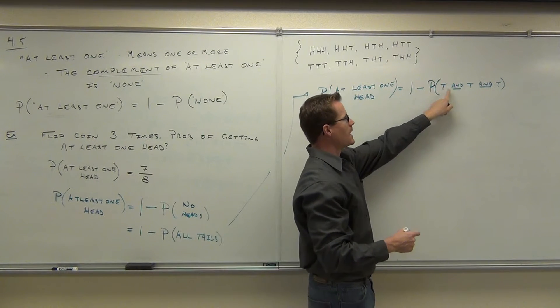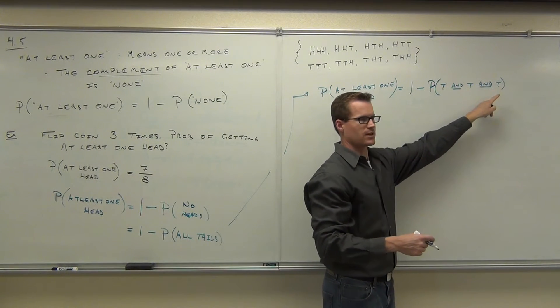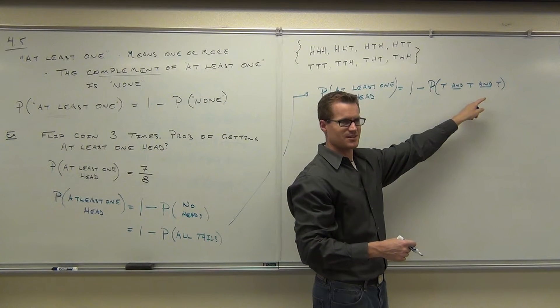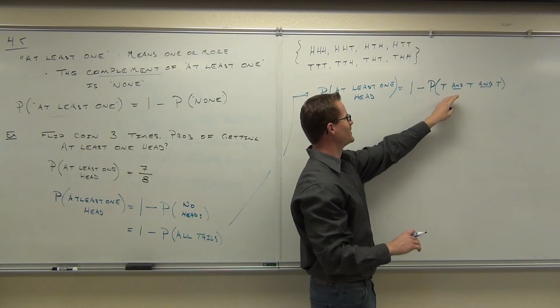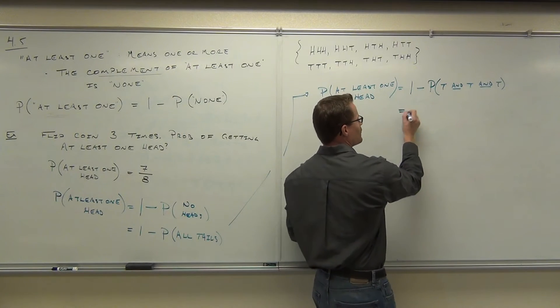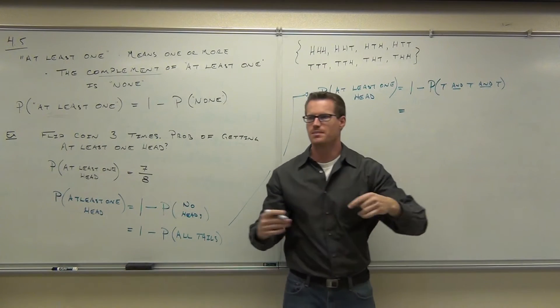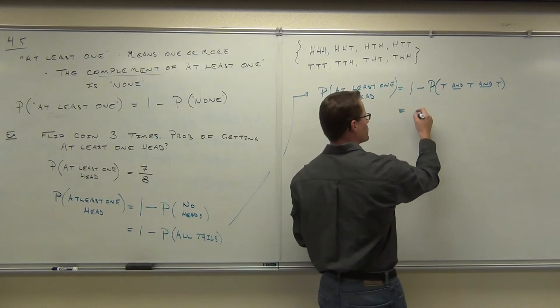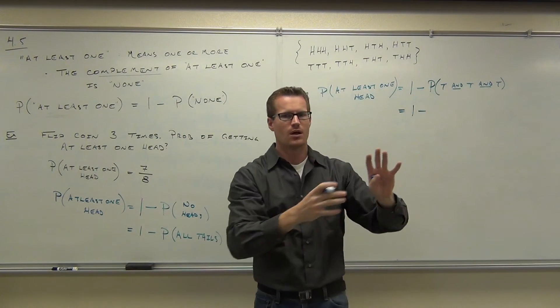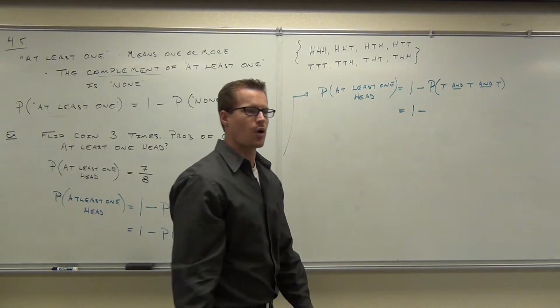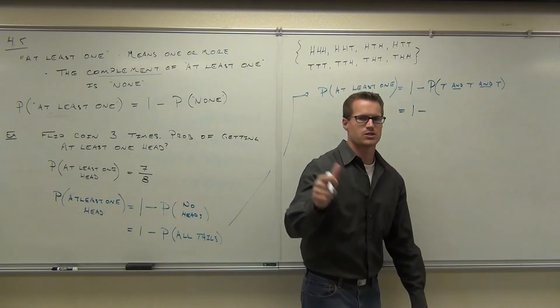If you have T and T and they're all independent, then what this comes down to is simply 1 minus what's the probability of a tail, and a tail, and a tail? Well you tell me this. Probability of a tail, and a tail, and a tail, if they're all independent, what's the probability of flipping your first tail?